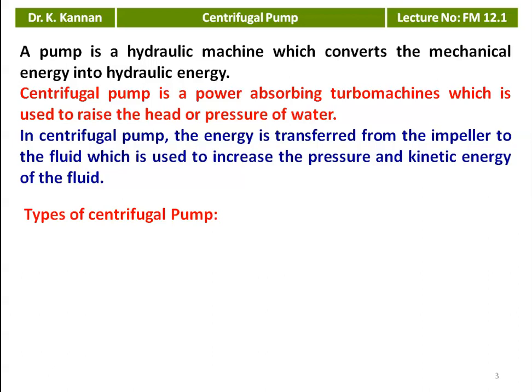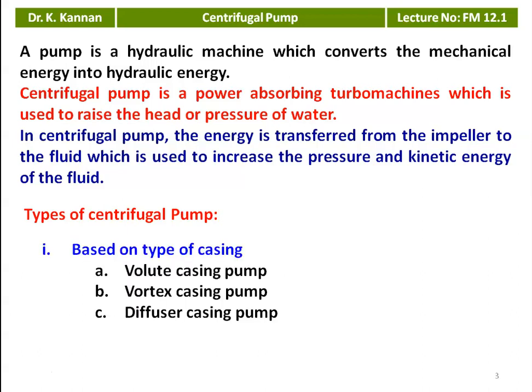There are different ways to classify the centrifugal pump. The first classification is based on the type of casing — the outer body. The types are: volute casing, vortex casing, and diffuser casing. We will see in later slides what each type of casing is.